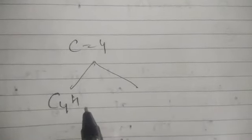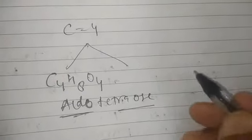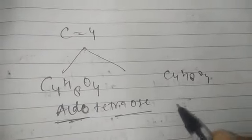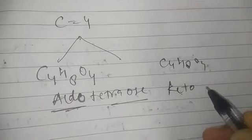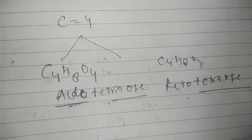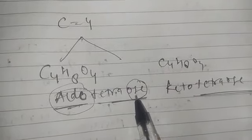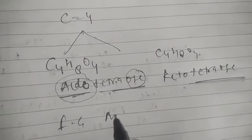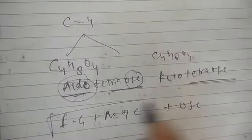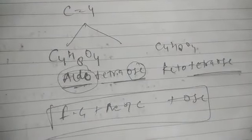For example, C4 monosaccharide: formula is C4H8O4. If it has an aldehyde group, the name is aldo-tetrose. If it has a ketone group with formula C4H8O4, the name is keto-tetrose. So naming follows: functional group prefix + number of carbons + '-ose'. This completes the nomenclature. That's all for this portion — this lecture number 9.1 ends here. Thank you.